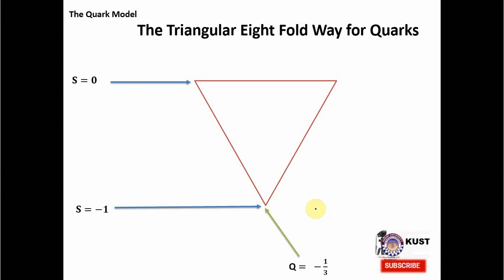Note that a single quark is not visible or experimentally detectable. Now, since we have assigned the properties of strangeness and charge to all three corners, we are ready to put quarks there. We place quark D at the leftmost upper corner, U at the second upper corner, and the strange quark at the bottom corner. These are the three flavors of quarks. In the next lecture, I will explain all the flavors of quarks inside the standard model.